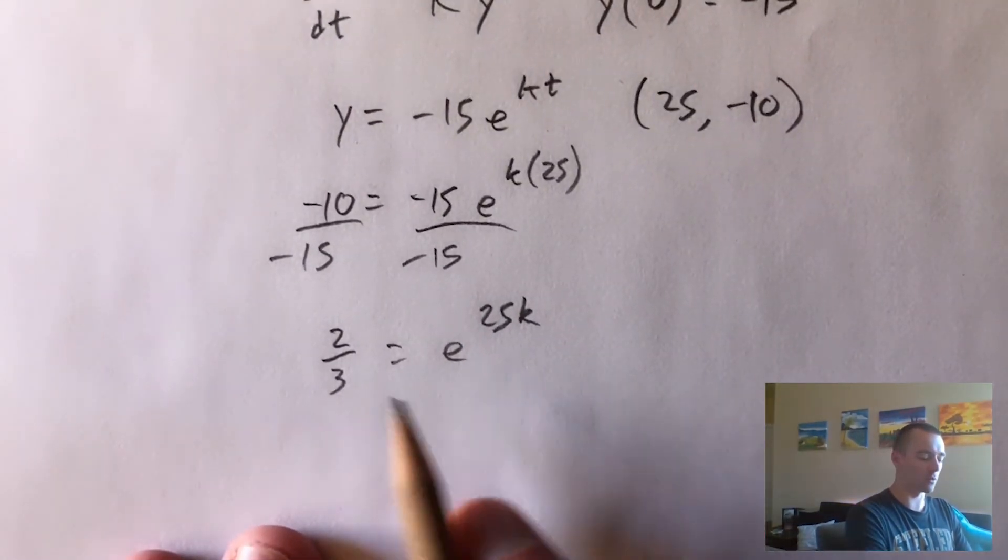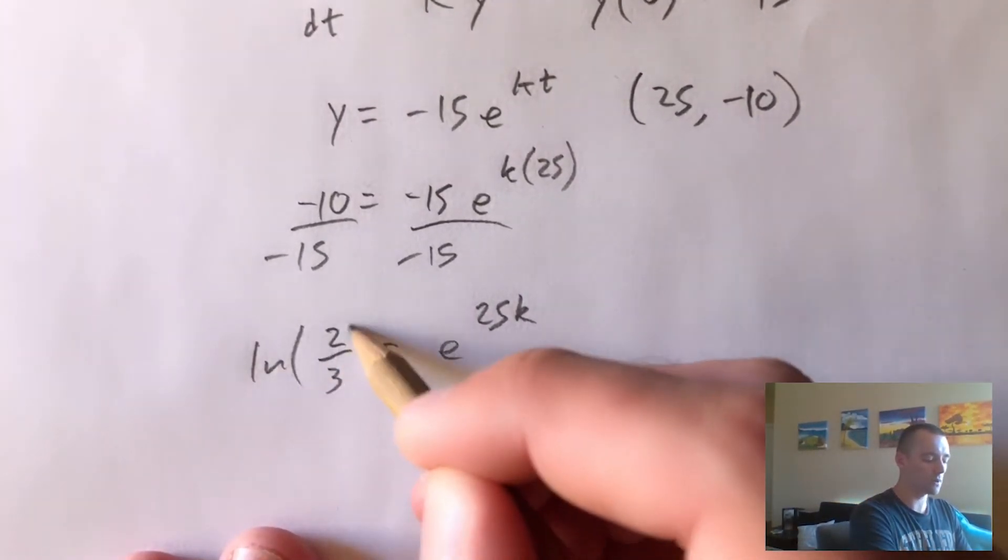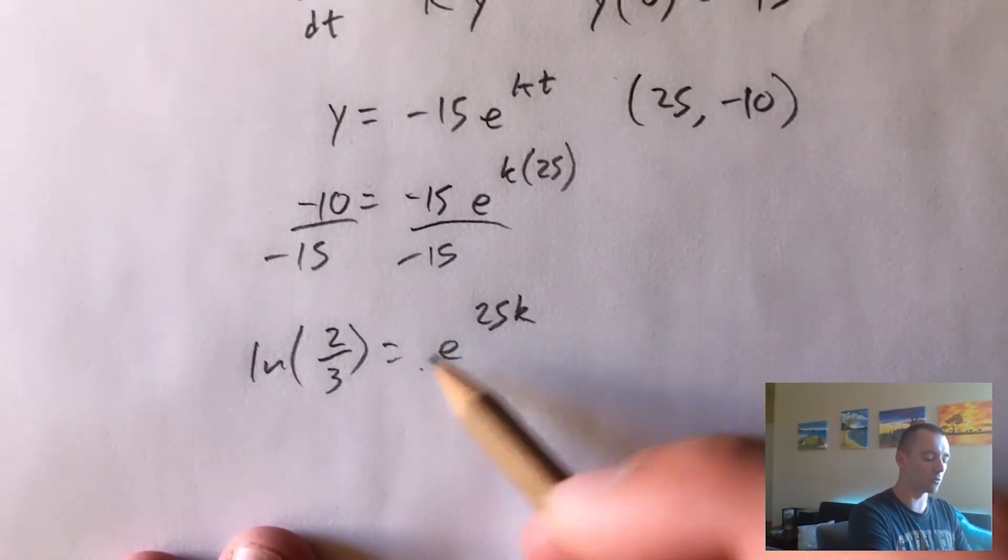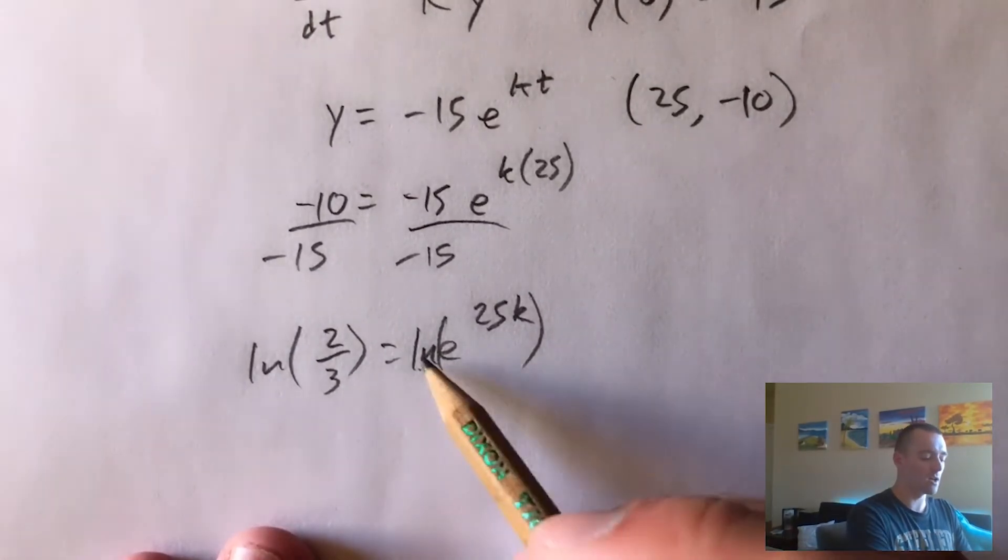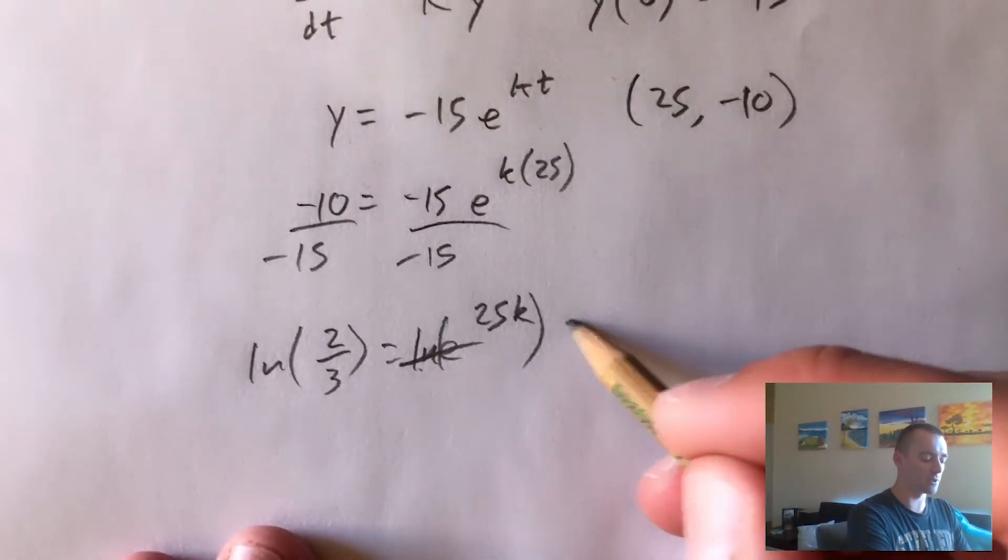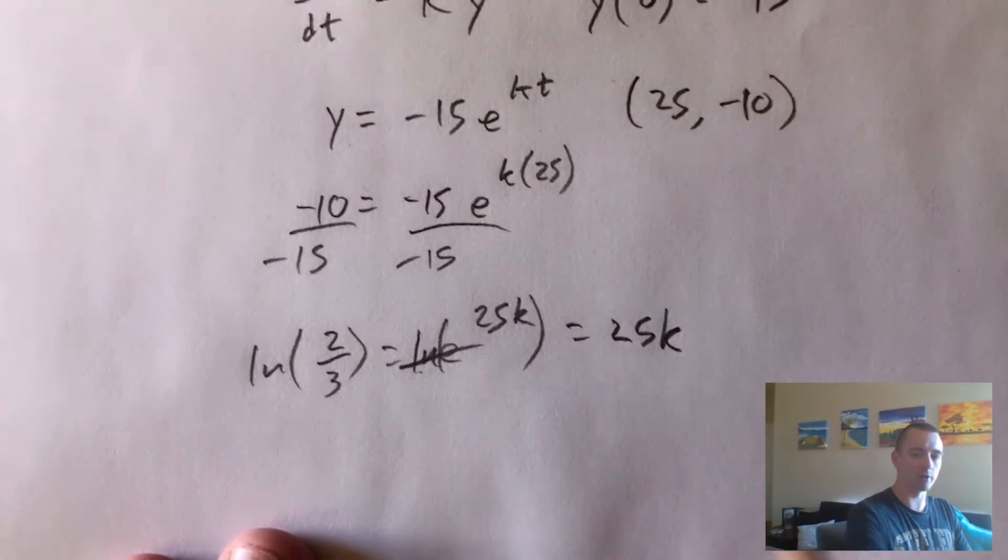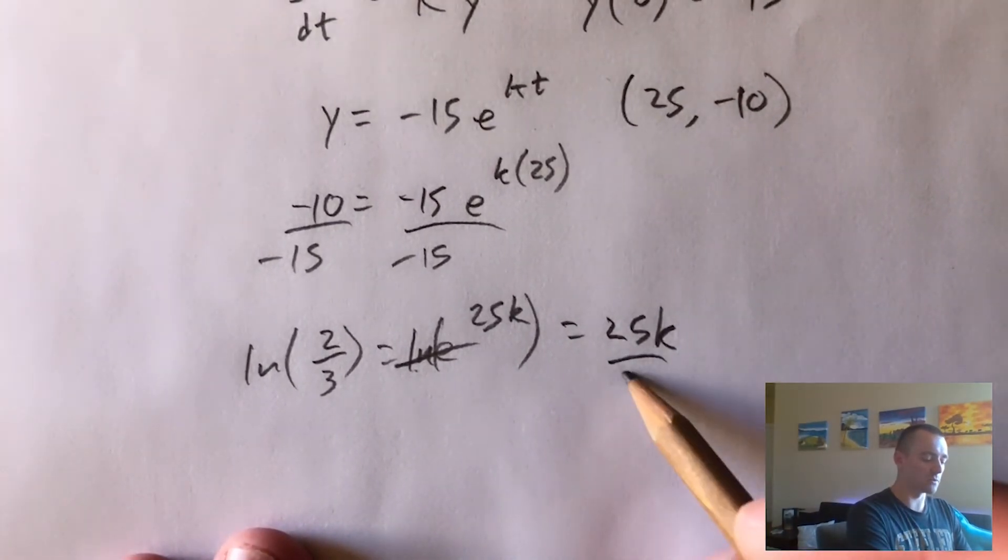Then we can take the natural log of both sides, giving us natural log of two thirds equals natural log of e to the 25k, the natural log and the e cancel. So we just get 25k over here, and then divide both sides by 25.